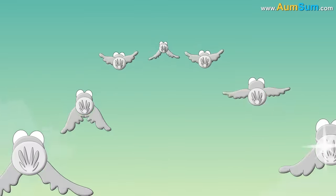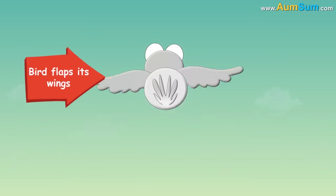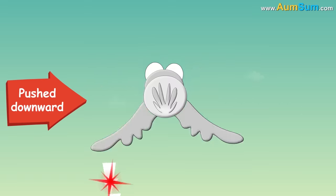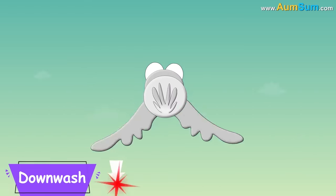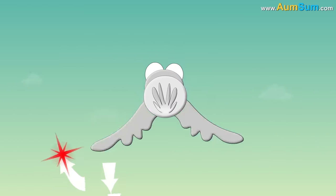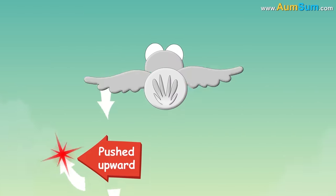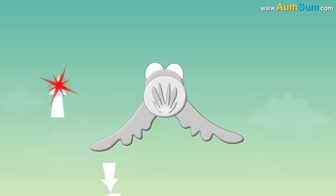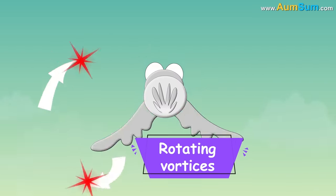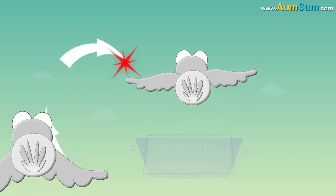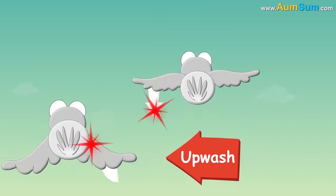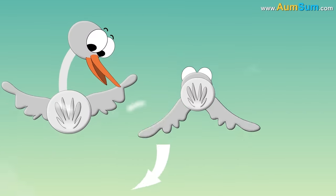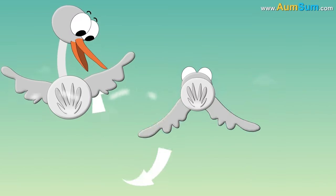In V formations, when a bird flaps its wings, the air behind the bird gets pushed downward creating a downwash, while the air towards its sides gets pushed upward creating an upwash. This produces rotating vortices. If another bird flies in these upwash zones, it gets a free lift and glides due to reduced air resistance.